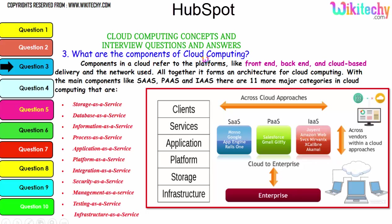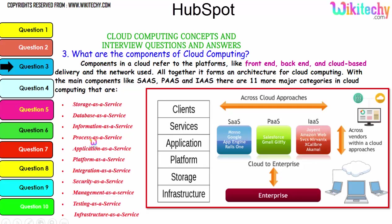Now let's talk about the components of cloud computing. Components refer to platforms like front-end, back-end, and cloud-based delivery, along with the network. Together they form cloud computing architecture with the main components: SaaS, PaaS, and IaaS. There are 11 major categories in cloud: storage as a service, database as a service, information as a service, process as a service, application platform, integration, security, management, testing, and infrastructure.